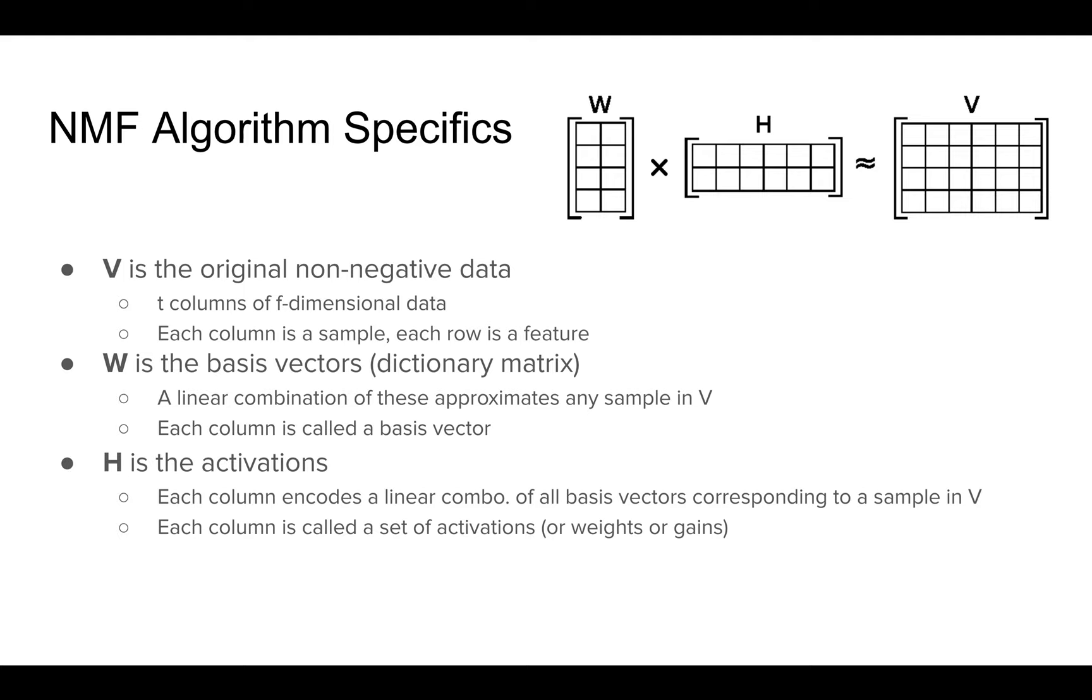So that's fed in. And then the two matrices that are made, W, one of them, is the basis vectors, also known as the dictionary matrix.